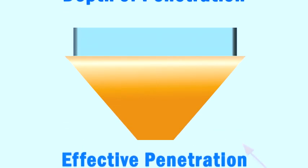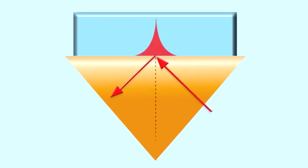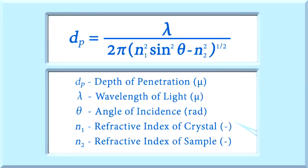In ATR an evanescent wave extends into the sample. The depth of penetration may be thought of as the depth where the evanescent wave may still interact with the sample effectively. It's a function of wavelength, angle of incidence of the IR beam, and the refractive indices of the ATR crystal in the sample.